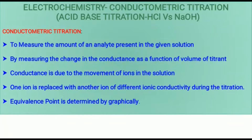Conductometric titration is a titration used to measure the amount of an analyte present in a given solution by measuring the change in conductance. The change in conductance is due to the movement of ions in the solution.